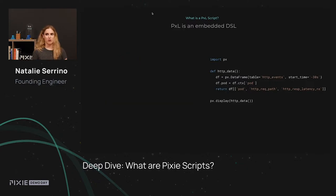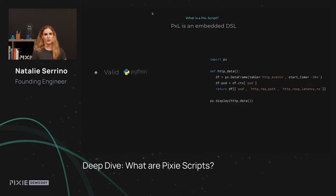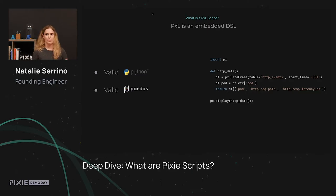To avoid building yet another query language, we needed a flexible API to work with data. Anyone familiar with Python may recognize some of the syntax on the right, because all Pixel code is valid Python. We don't actually execute Python under the hood, but the hope is that users already familiar with Python don't have to learn a new syntax.